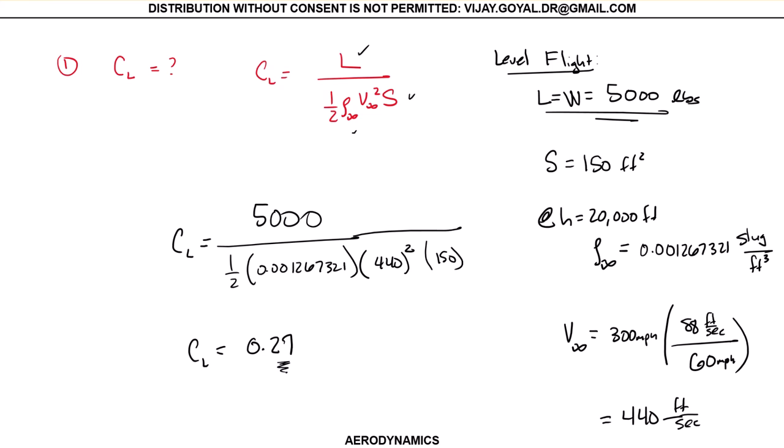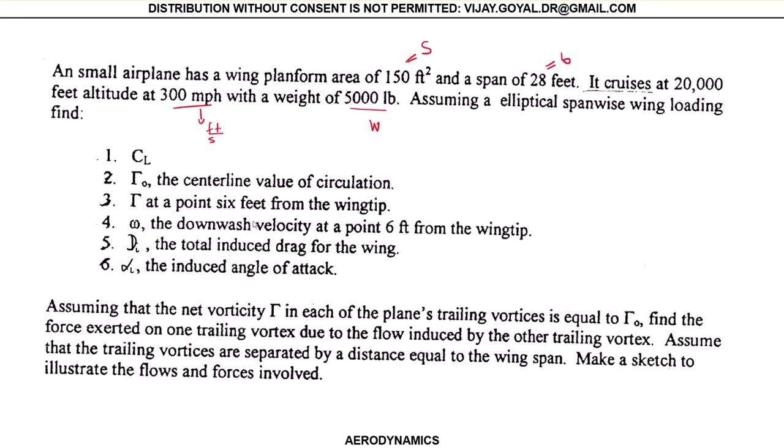The second question you asked for is find the circulation at the centerline. To find your circulation at the centerline, we know that this is equal to 2 CL S V infinity divided by pi b. This equals 407 feet squared per second if you replace all the values.